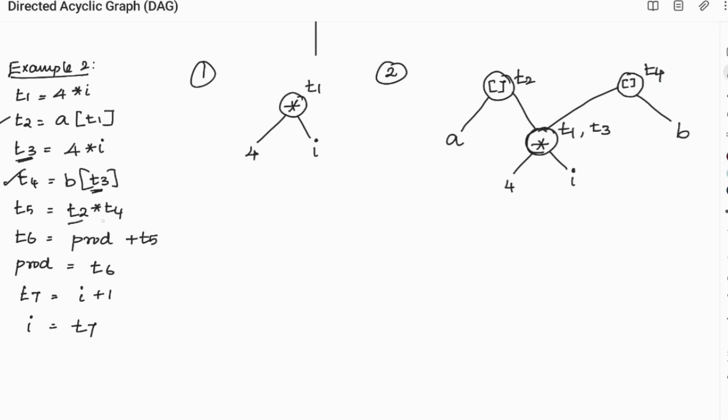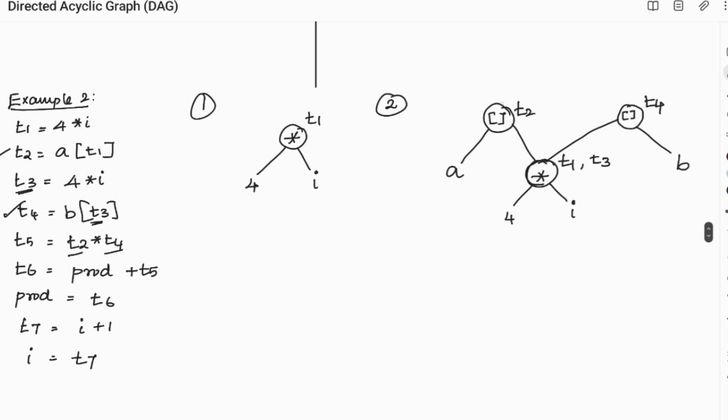Now we have to product t2 and t4 and assign to t5. So it is very simple. I am making the multiplication steps of t2 and t4 and assigning to t5. I have assigned it.